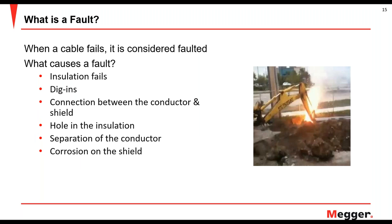Going over to faults — when a cable fails, it's considered faulted. What causes the fault? It could be anything: insulation failure from transient overvoltages, a dig-in like an excavator, a physical short between the conductor and the shield where they're physically touching, a pinhole in the insulation, or a complete separation of the conductor — meaning a high fault current physically melted an aluminum cable in two. It could also be corrosion in the shield, where the unjacketed concentric neutral corroded over time where it's no longer viable and you have an open on the concentric neutral or shield.